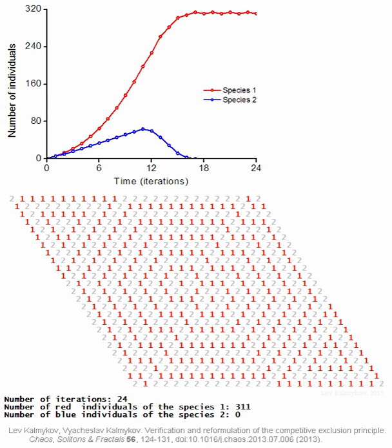Ecological population modeling is concerned with the changes in parameters such as population size and age distribution within a population. This might be due to interactions with the environment, individuals of their own species, or other species.